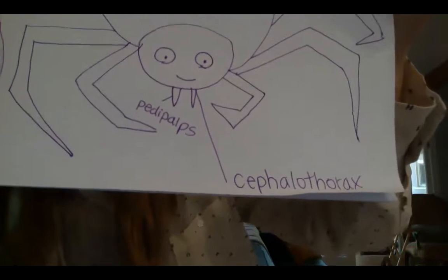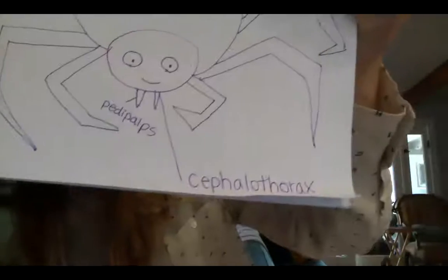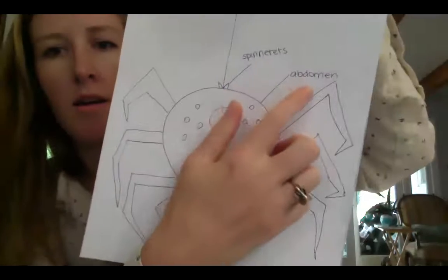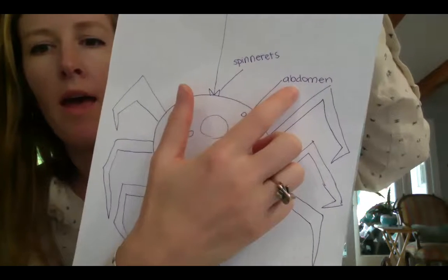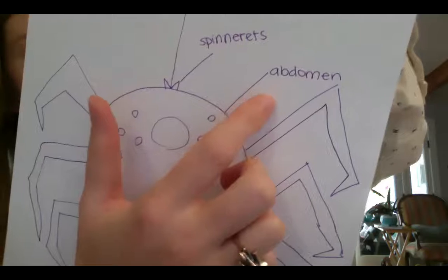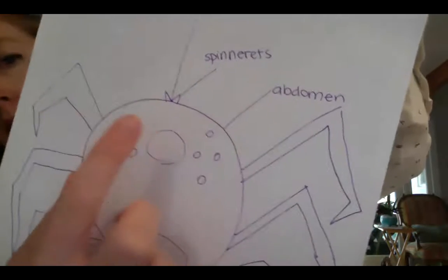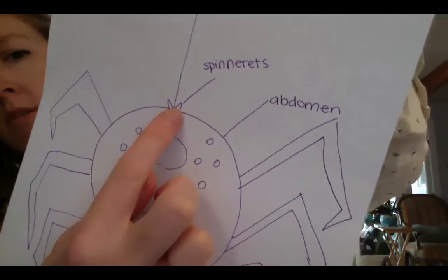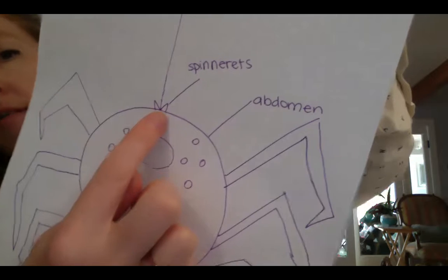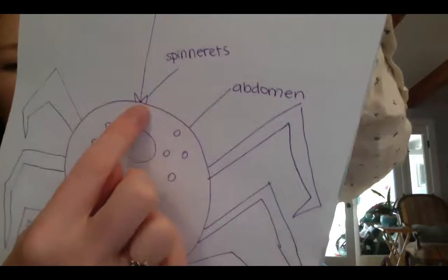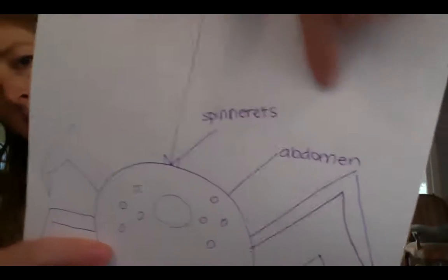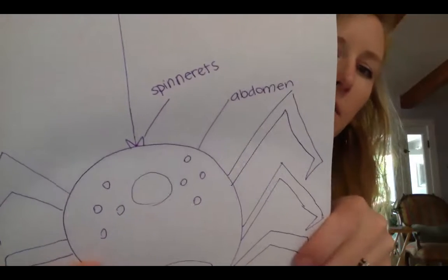Once you have the pedipalps and the cephalothorax, make sure you also have the abdomen labeled. One part that was not included on that drawing are the spinnerets — like two little triangles at the very end of the abdomen. Sometimes there are six or eight spinnerets; we're going to draw two. These produce silk — you can see a line of silk coming out, and that's made by the spinneret.